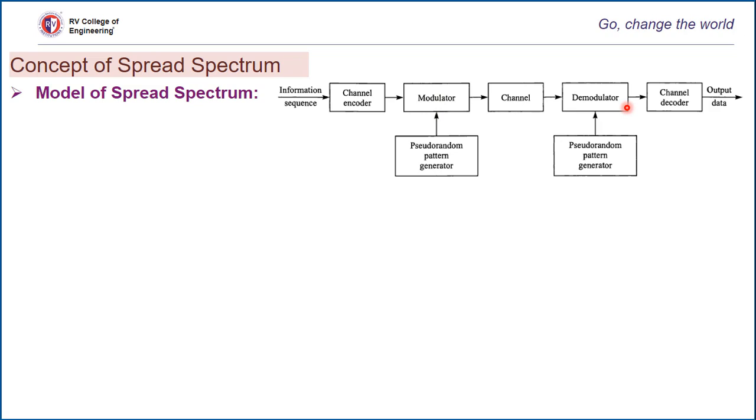In addition to these elements, we have two identical pseudorandom pattern generators: one that interfaces with the modulator at the transmitting end and a second that interfaces with the demodulator at the receiving end.